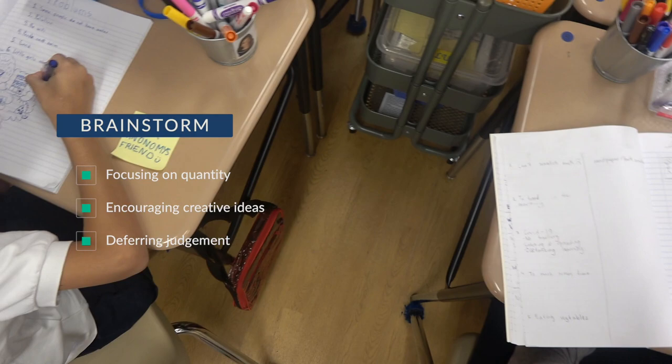They then started brainstorming ways of answering their 'How Might We' questions, focusing on quantity, encouraging creative ideas, and deferring judgment. I modeled the process by sketching out my ideas and then asking myself: What animal or plant structure could I mimic to solve the problem? How would nature answer my 'How Might We' question?